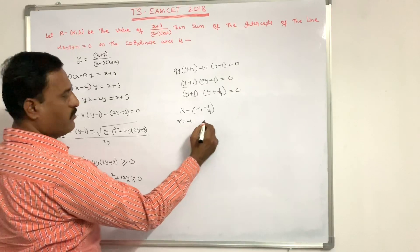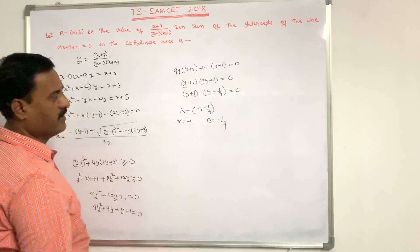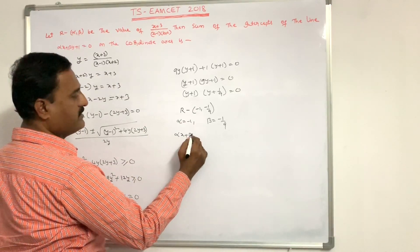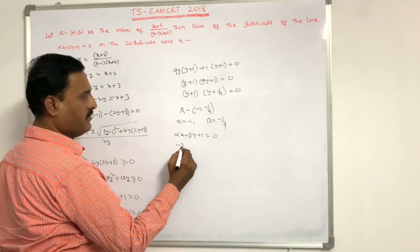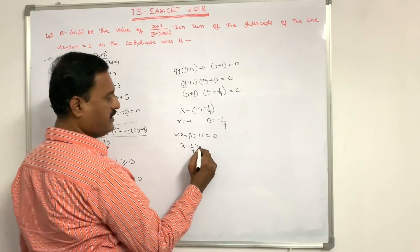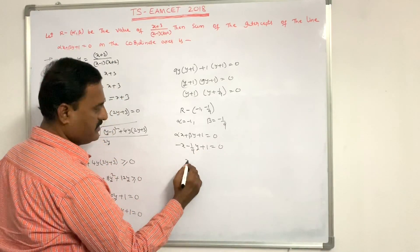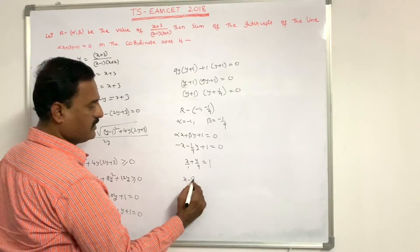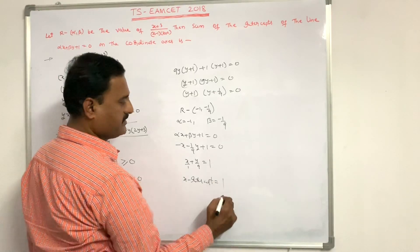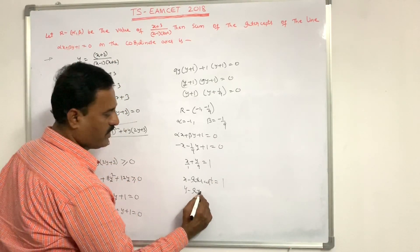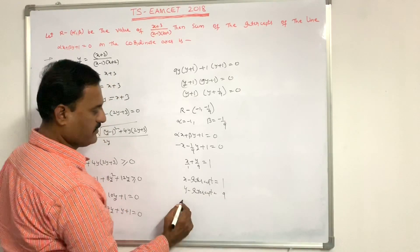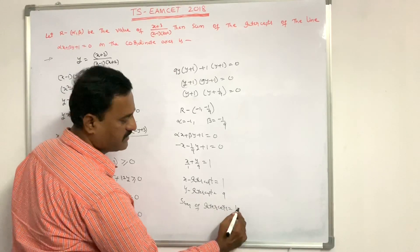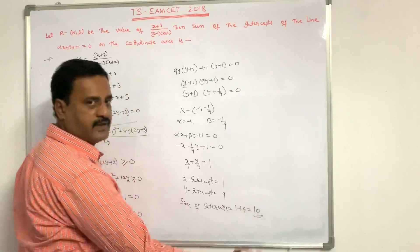Here α = -1 and β = -1/9. Substituting in αx + βy + 1 = 0: -x - (1/9)y + 1 = 0, which gives x + y/9 = 1. The x-intercept is 1 and the y-intercept is 9. Therefore the sum of the intercepts = 1 + 9 = 10. That is the answer.